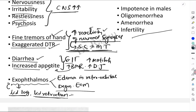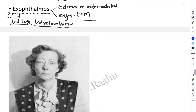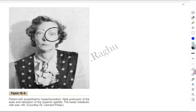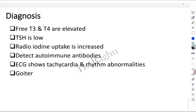Regarding the reproductive system, excessive T3 and T4 can cause impotence in males, and oligomenorrhea and amenorrhea in females, leading to infertility. T3 and T4 are essential for normal functioning of the reproductive system, so excess causes these features. A diagram shows exophthalmos and enlargement of the thyroid gland — which is goiter.